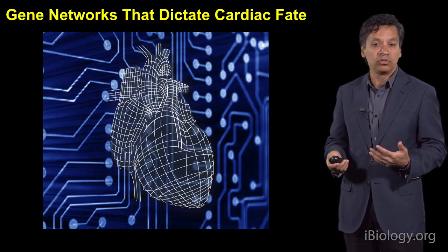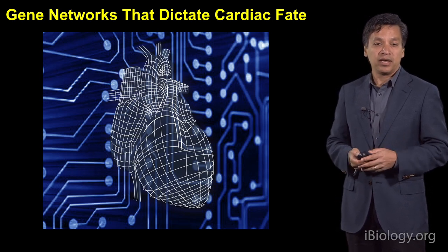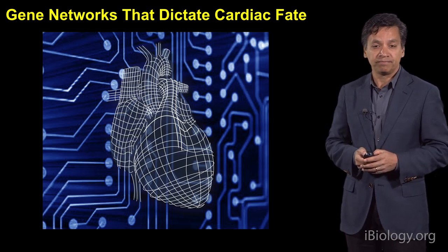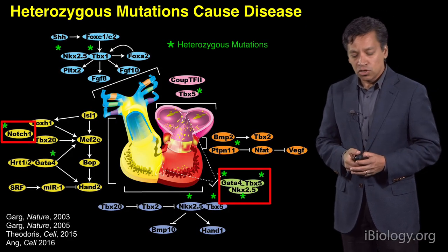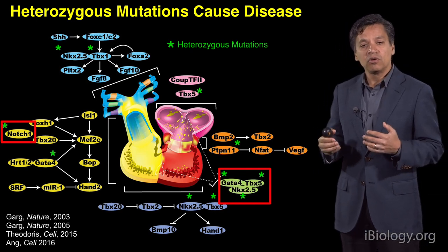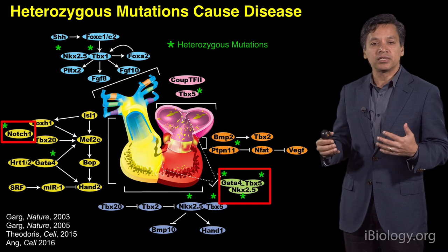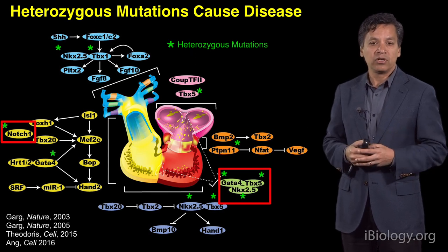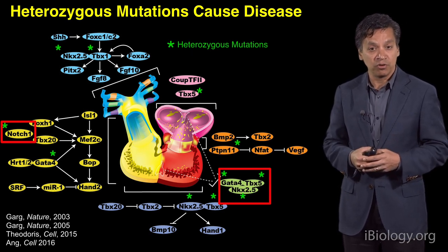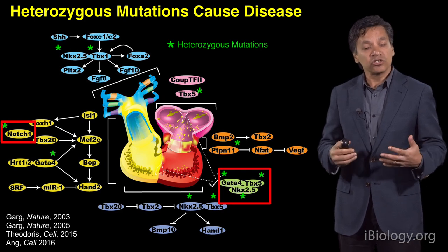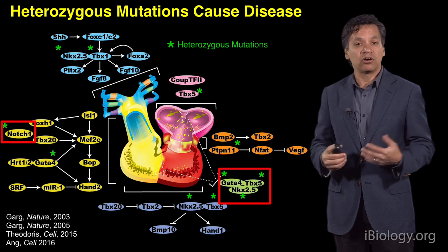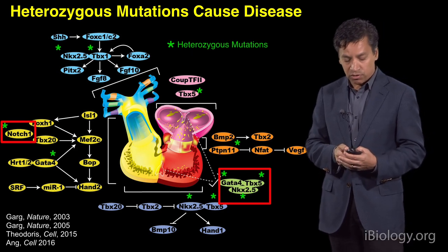Currently, we now have the tools to do that in biology that we couldn't do even just a few years ago. We've known enough to know what the key players are, and so we've begun to ask: are these gene networks that we have discovered the ones that are in fact disrupted in the setting of human disease? And the answer, as it's evolving, is yes — these are indeed the key genes that are disrupted.